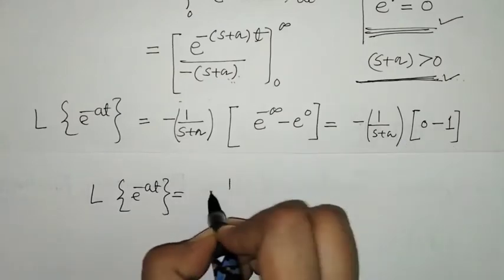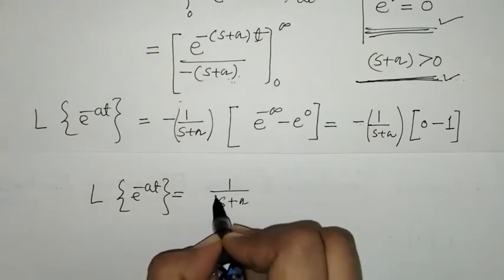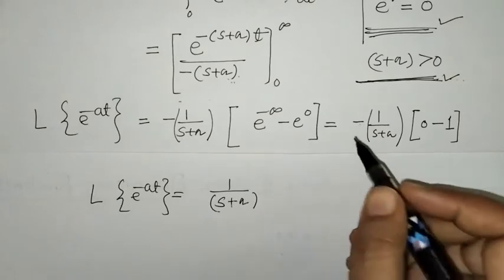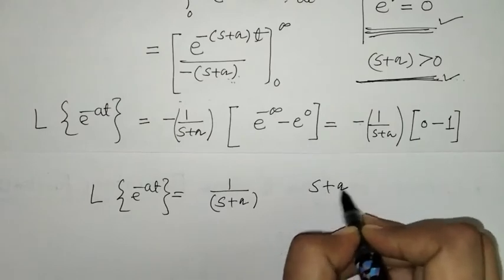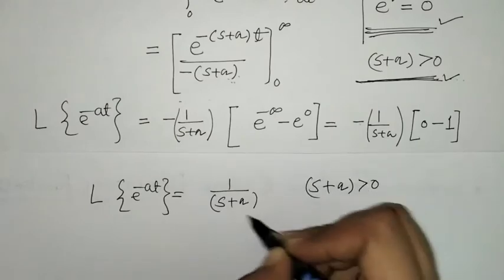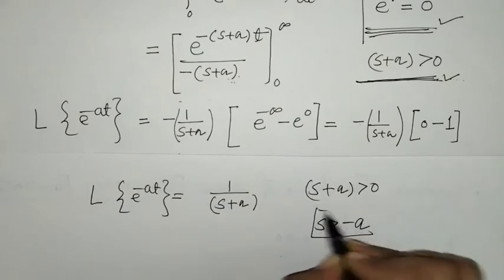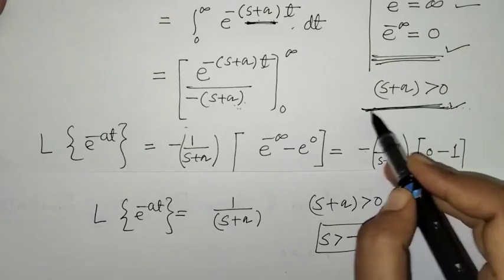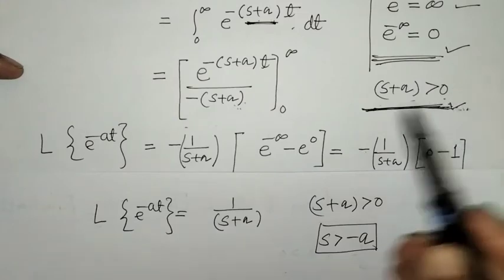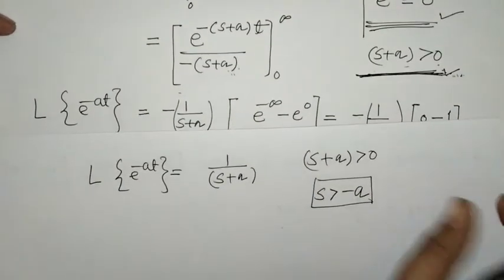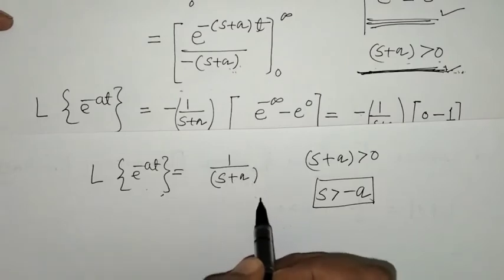On simplification, minus minus gives plus, so here we have e raised to minus infinity is 0 and e raised to 0 is 1, giving 1 upon s plus a. The condition on s is s plus a greater than 0, which means s is greater than minus a. This condition is necessary to get a well-defined Laplace transform. So the Laplace of e raised to minus at equals 1 upon s plus a.